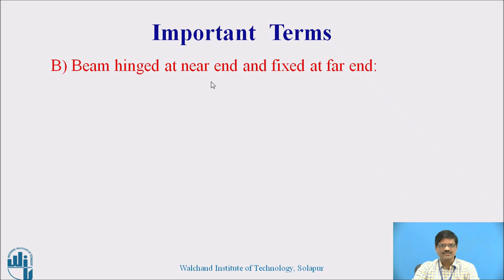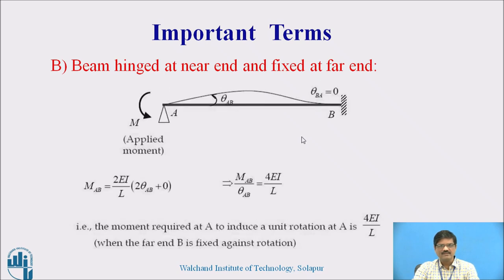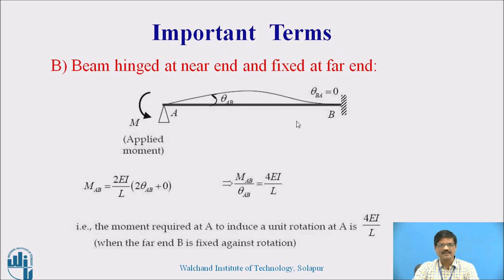The second case is a beam hinged at the near end and fixed at the far end. Here B is fixed. If we apply a moment to produce a unit rotation at the near end, the moment required will be equal to 4EI by L. So we call 4EI by L the stiffness of this member. To summarize: when the opposite end is hinged, stiffness is 3EI by L; when the opposite end is fixed, stiffness is 4EI by L. These values will be used further when we solve problems.